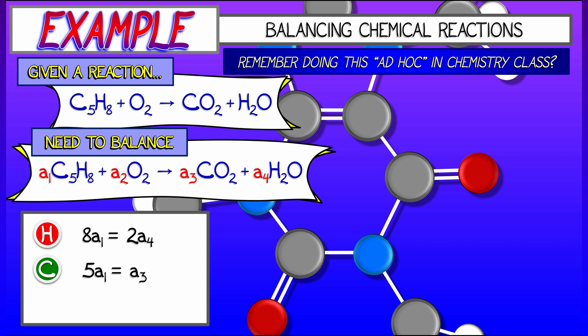For carbon, we get 5 times A1 equals 1 times A3. And then for oxygen, we wind up getting 2 times A2 equals 2 times A3 plus 1 times A4.